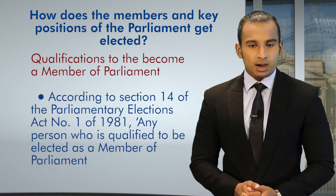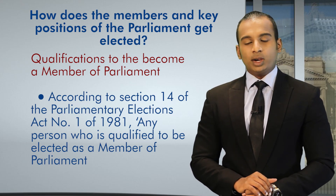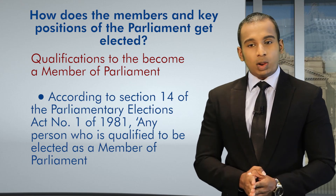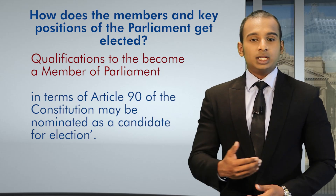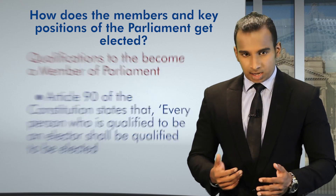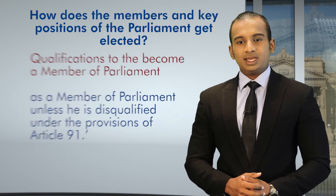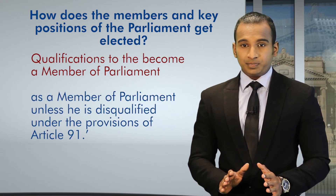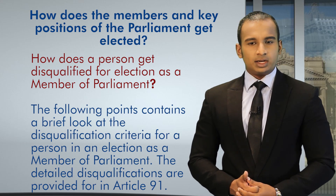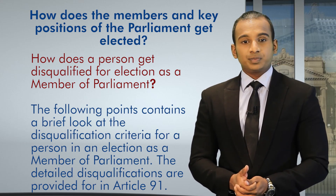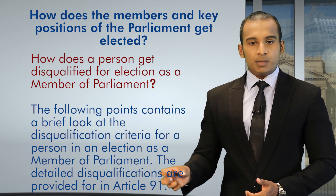Let's now take a look at qualifications to become a Member of Parliament. According to section 14 of the Parliamentary Elections Act No. 1 of 1981, any person who is qualified to be elected as a Member of Parliament in terms of Article 90 of the Constitution may be nominated as a candidate for an election. Article 90 of the Constitution states that every person who is qualified to be an elector shall be qualified to be elected as a Member of Parliament, unless he is disqualified under the provisions of Article 91.